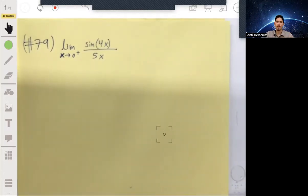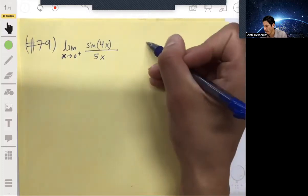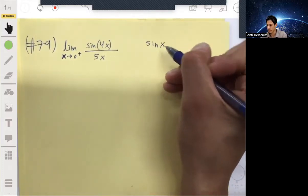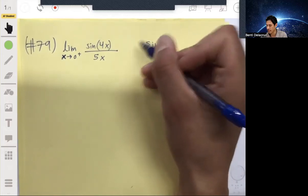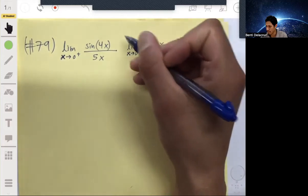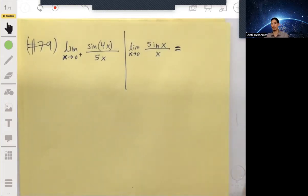In this problem we're actually going to do like a sort of magic trick, so to speak. Our idea is to apply the limit of sin(x) over x as x approaches zero.